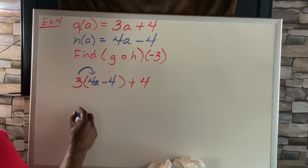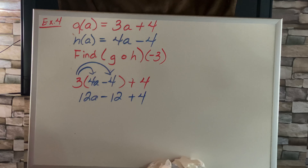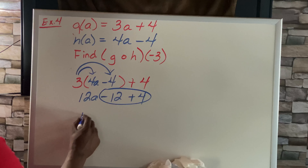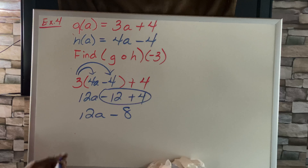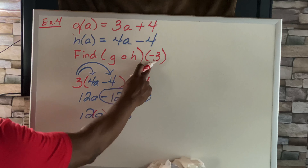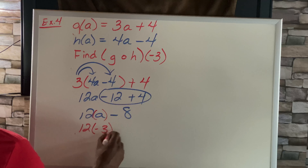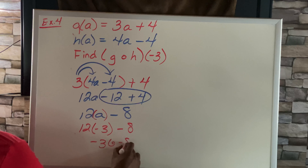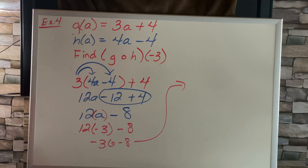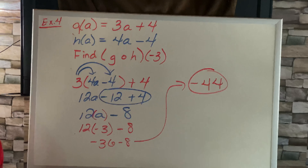Next we do the distributive property: 3 times 4a is 12a, and 3 times negative 4 is negative 12. Bring down the plus 4 — these two are like terms, so negative 12 plus 4 is negative 8, giving 12a minus 8. Now we plug in negative 3: 12 times negative 3 minus 8 equals negative 36 minus 8, which is negative 44.